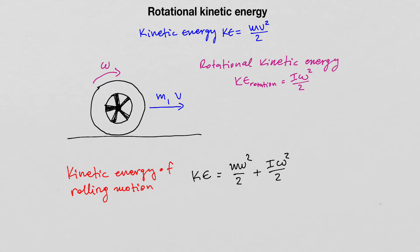When an object is in pure rotational motion — imagine the car was lifted and the wheel is rotating but the car is not moving in any direction — in this case, the wheel only possesses kinetic energy of rotation: I omega squared divided by 2.